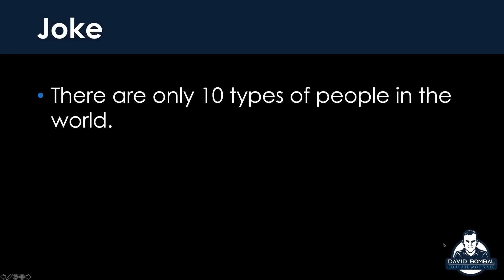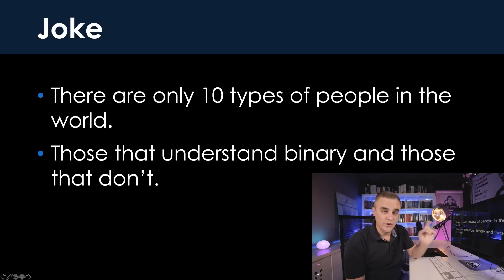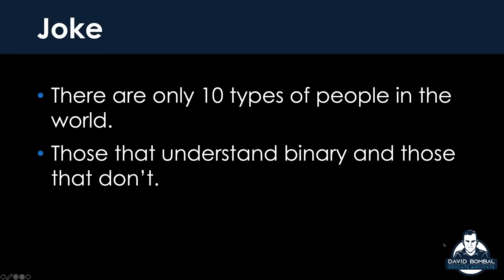There are only one-zero types of people in the world — those that understand binary and those that don't. How would you read that number? Would you read it as 'one zero,' as in 10, or would you read it as two? That one-zero means two in binary, so the joke is there are only two types of people in the world. If you didn't get the joke, don't worry — by the end of this video you'll understand it and know where the one-zero comes from.